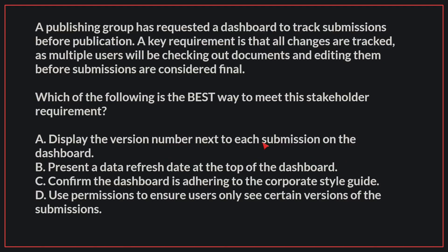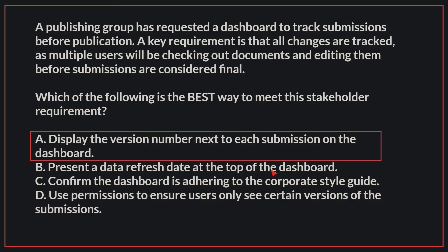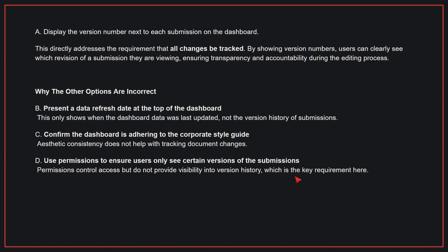A publishing group has requested a dashboard to track submissions before publication. A key requirement is that all changes are tracked, as multiple users will be checking out documents and editing them before submissions are considered final. Which of the following is the best way to meet this stakeholder requirement? The correct answer is A: Display the version number next to each submission on the dashboard. This directly addresses the requirement that all changes be tracked.